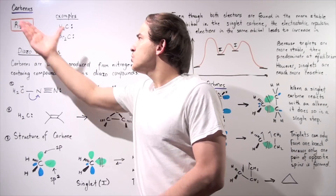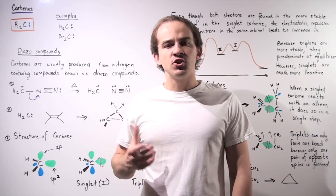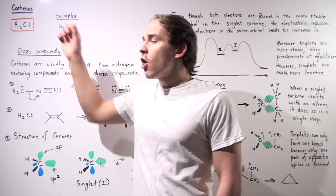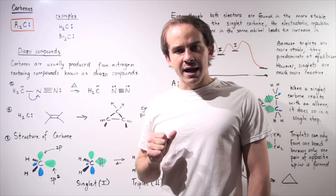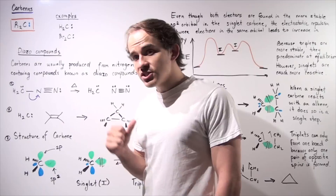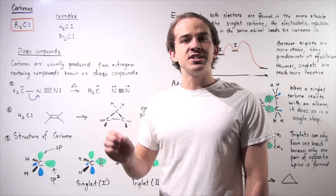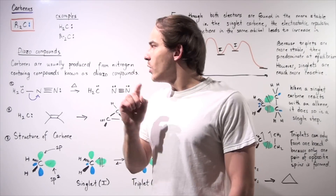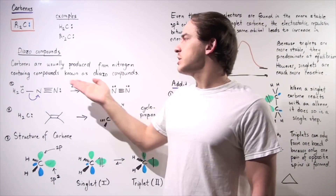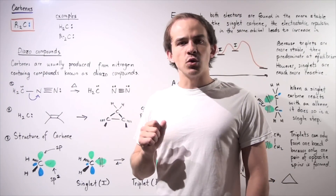So where do carbene molecules come from? Generally speaking, we can form carbene compounds from diazo compounds. A diazo compound is a compound that contains nitrogen atoms. So carbenes are usually produced from nitrogen-containing compounds known as diazo compounds.